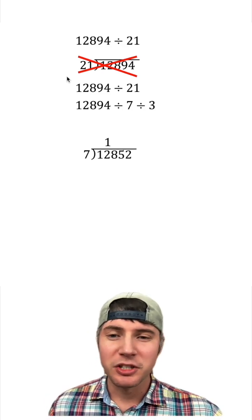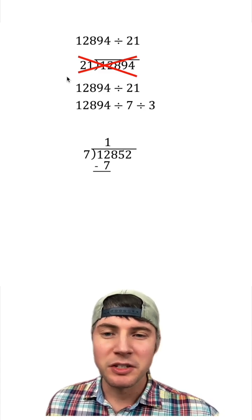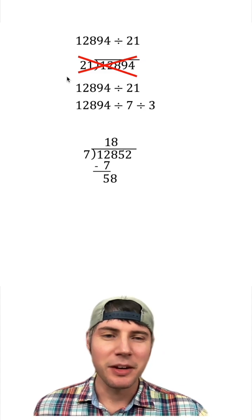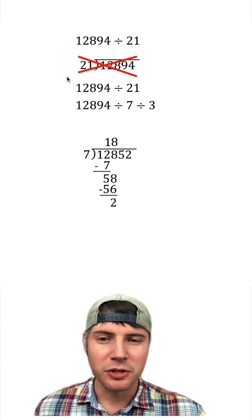So let's start with 7. 7 goes into 12 one time. 7 times 1 is 7. Subtract, we get 5. Bring down the 8. 7 goes into 58 eight times. 7 times 8 is 56. Subtract, we get the 2. Bring down the 5.